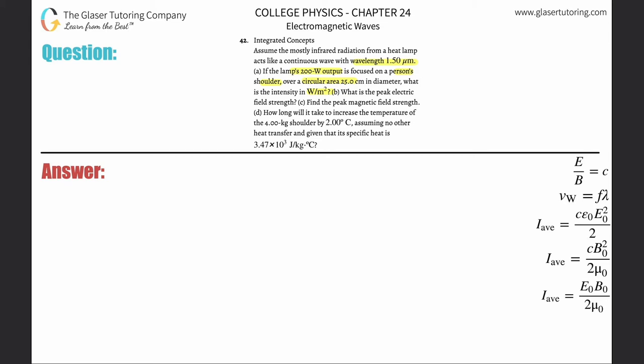A couple of assumptions are going to be made in this problem. When they want to know the intensity in watts per meter hitting the person's shoulder, they said a circular area, so that means the area of a circle is going to be pi r squared.